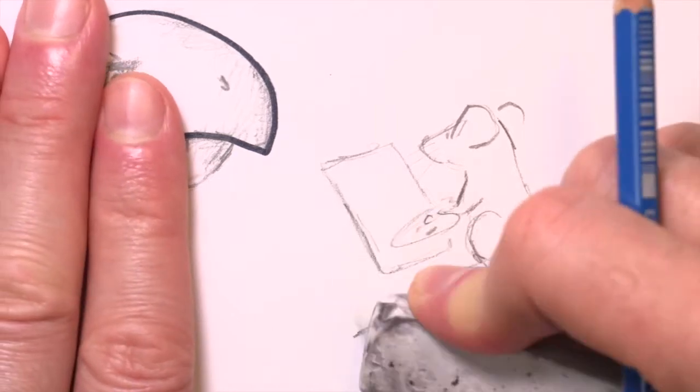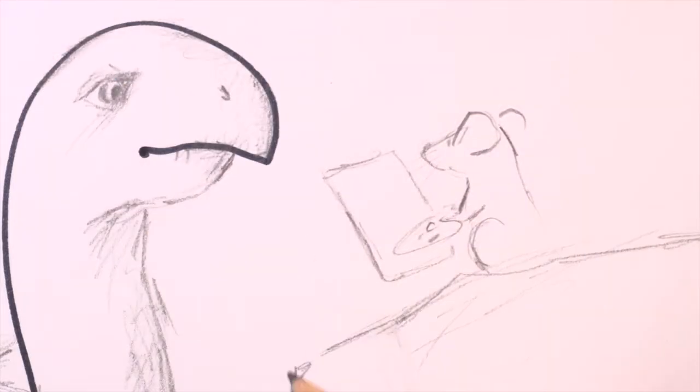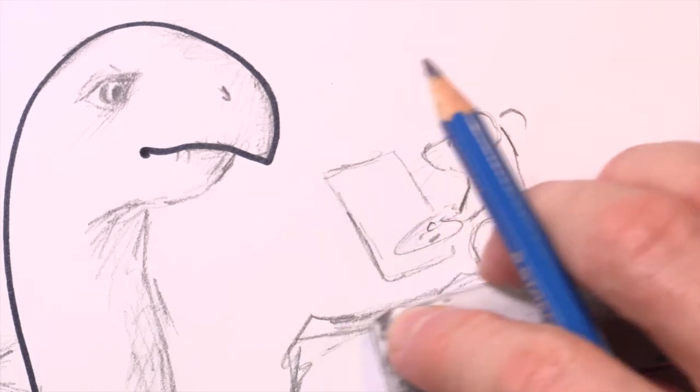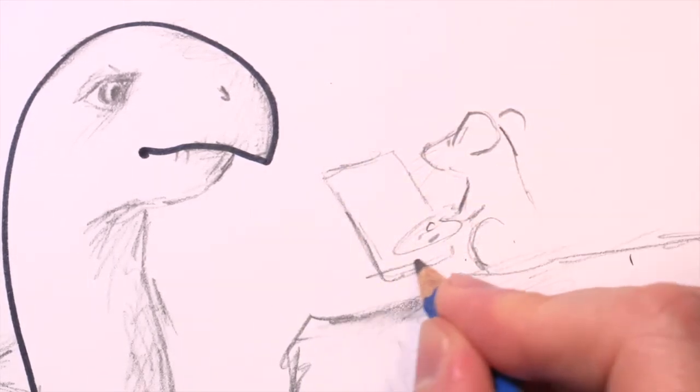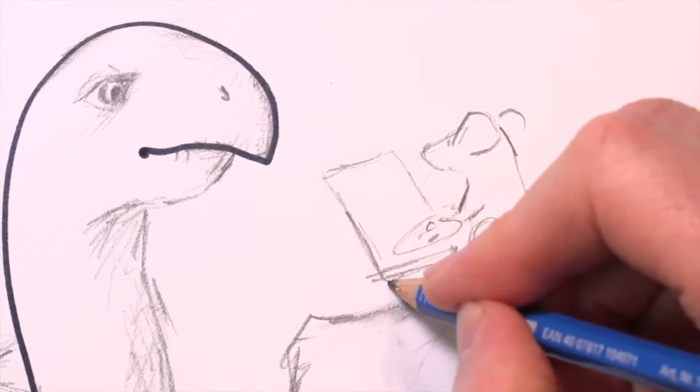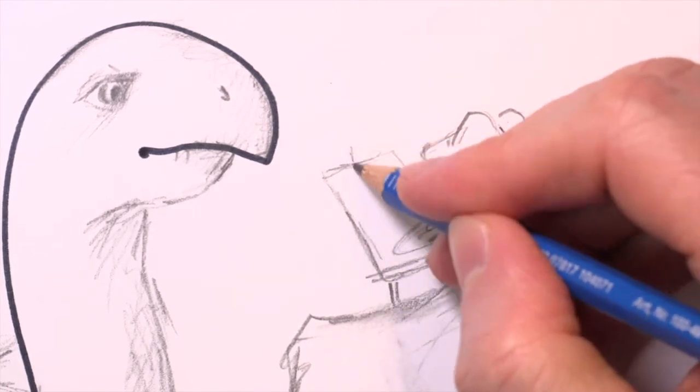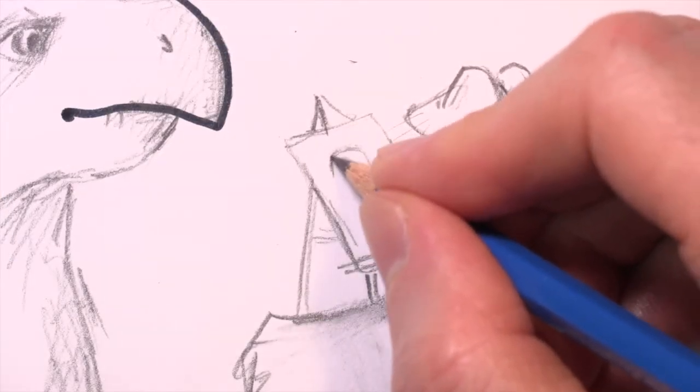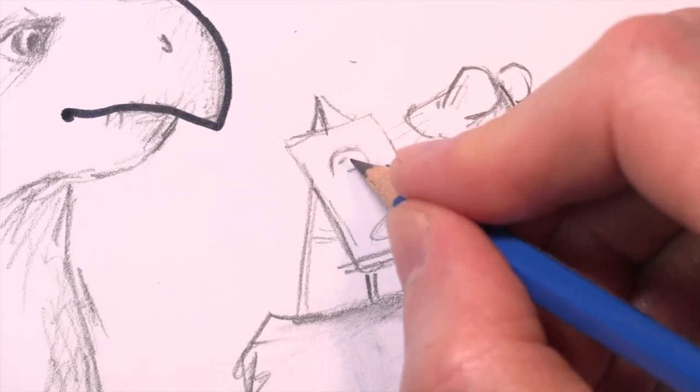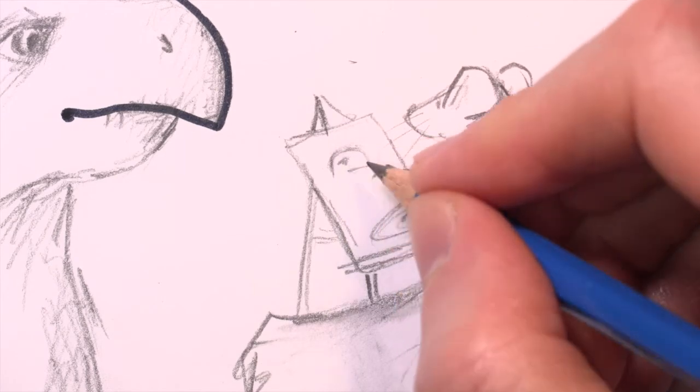I better make the ledge bigger so that there's room for the mouse's easel. And she's doing a portrait of her friend the tortoise. And now I'll draw her painting. So now I'll draw the tortoise again really, really small on the mouse's canvas.